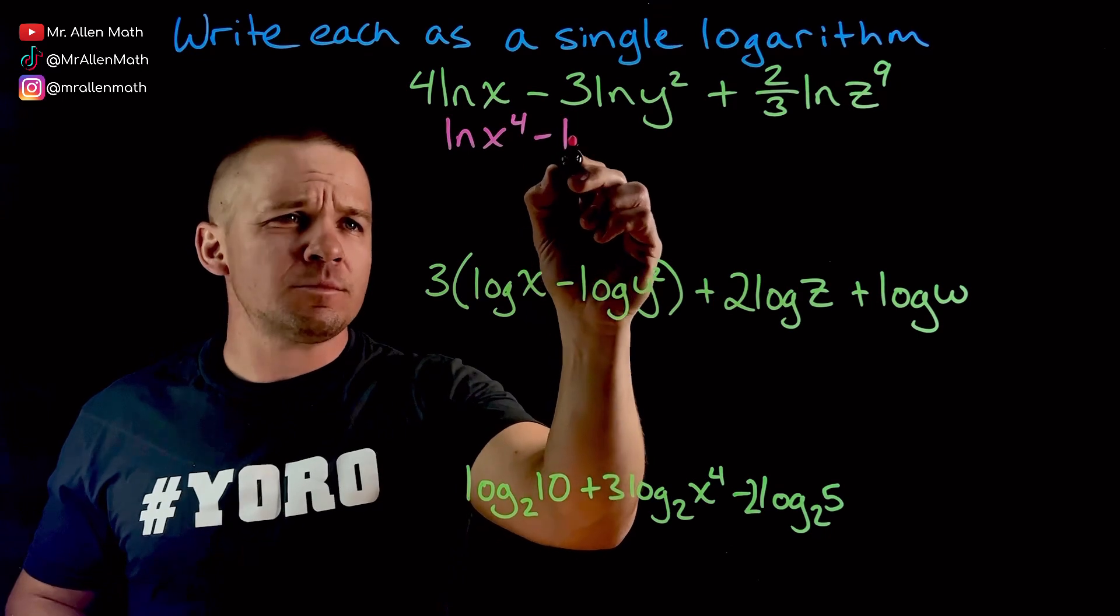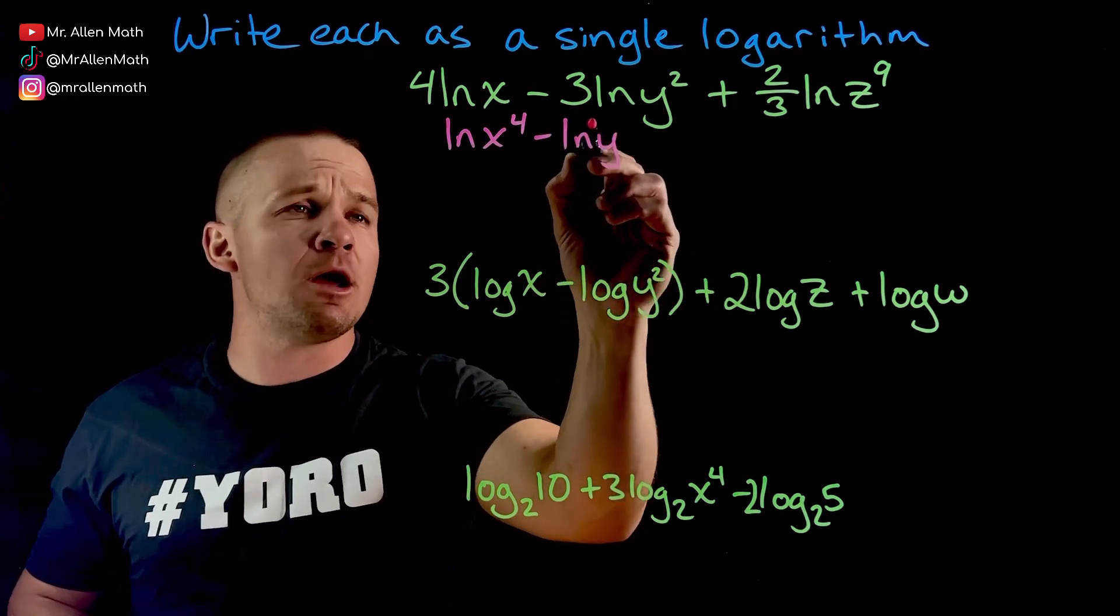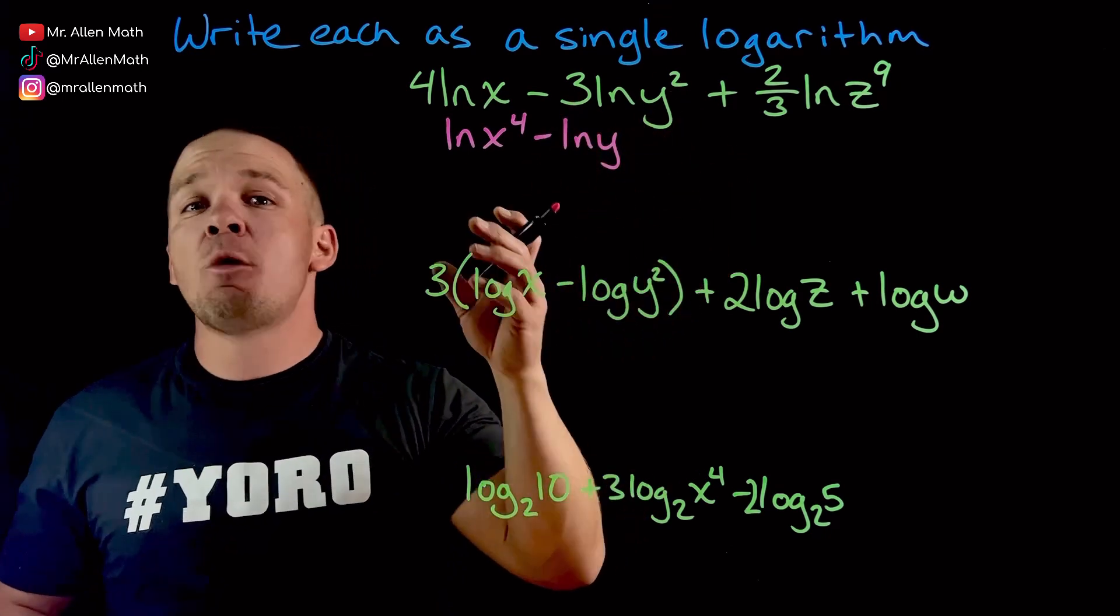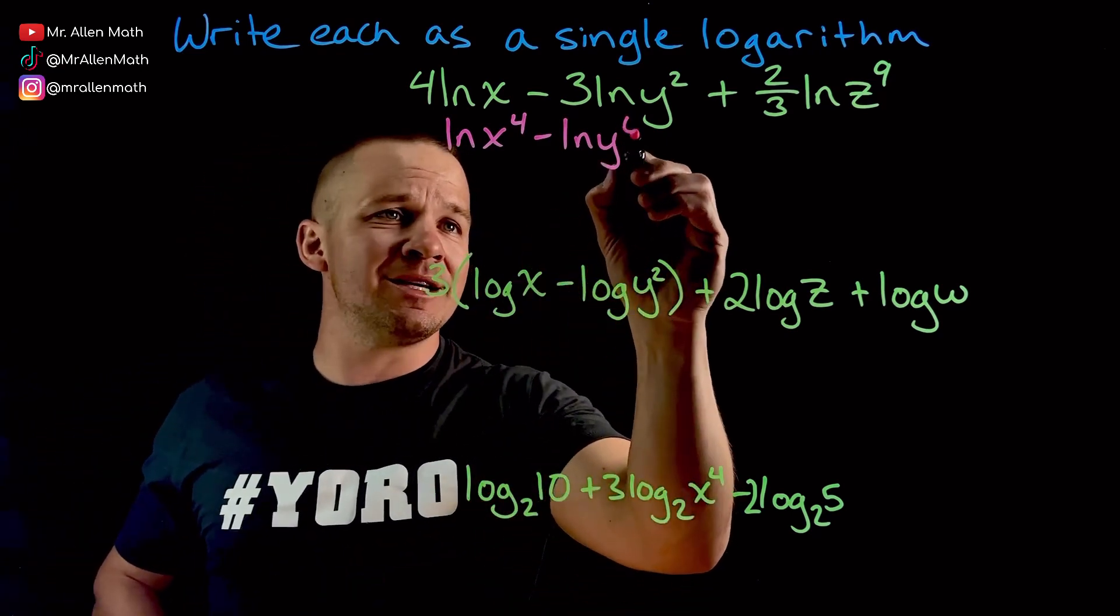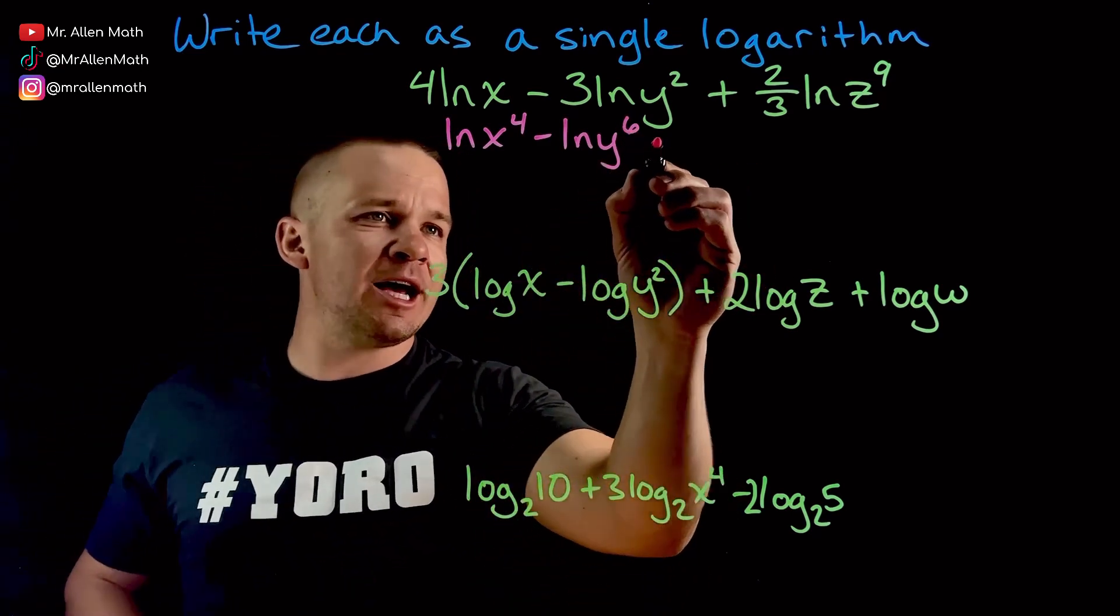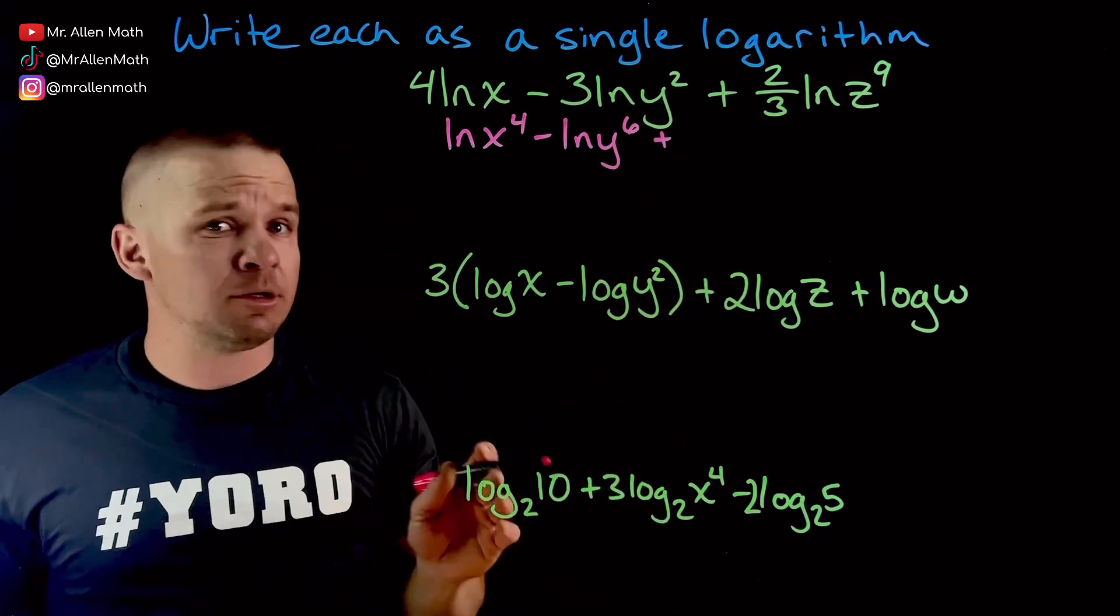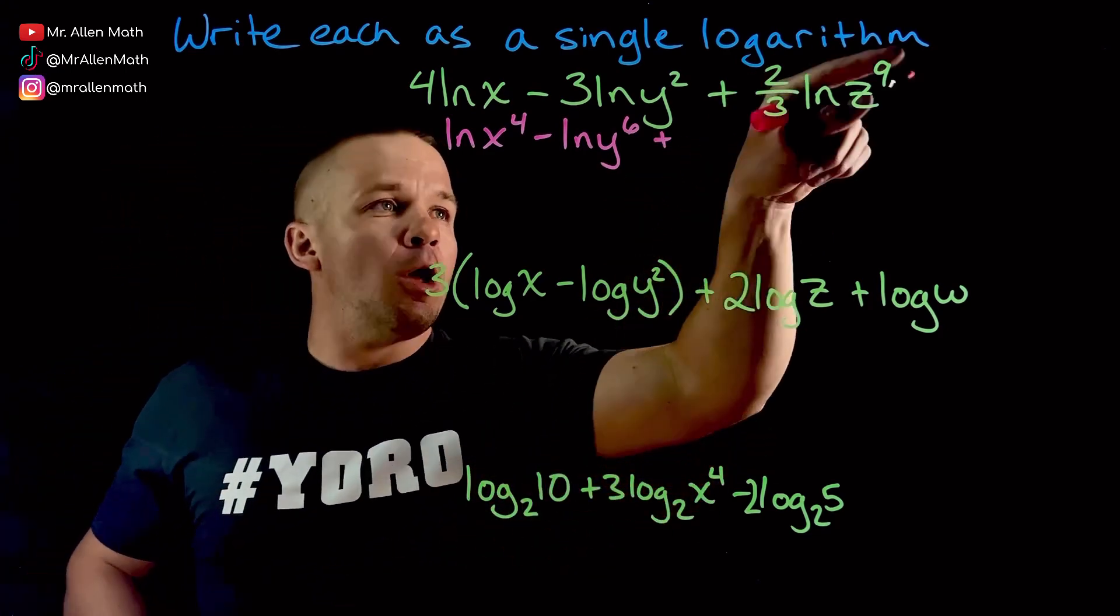I'm going to keep this negative out front. We're going to have natural log of y to the, well, what's three times two power to a power exponent properties. We're going to do three times two is going to be y to the sixth power, and then this last one here, which is a little bit scary with a fraction. We're going to bring that up, so it's two thirds.